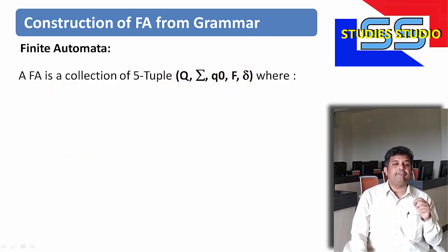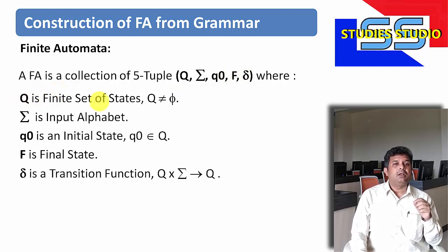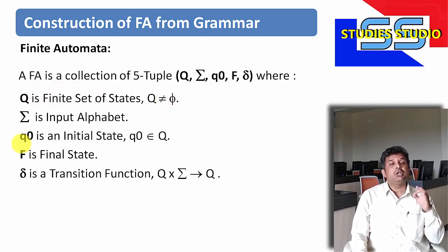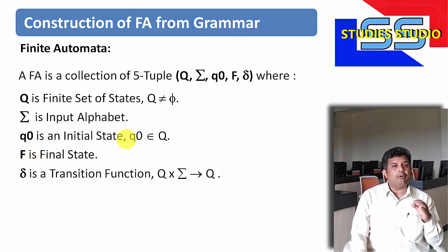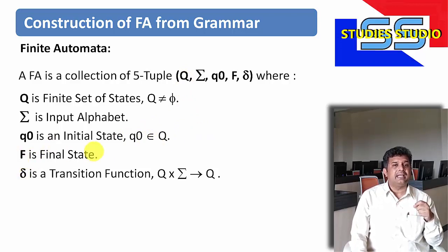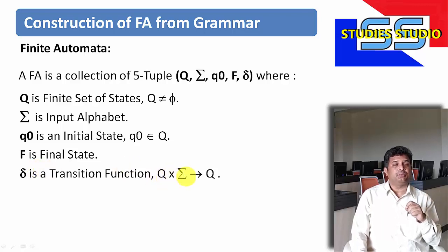Q, Sigma, Q0, F and Delta. Where Q is the finite set of states, which is not equal to empty set. Sigma is the set of input alphabets. Q0 is the initial state, which is a part of the set of states. F is the final state — there may be one or more final states. And Delta is the transition function, which maps Q cross Sigma to Q.